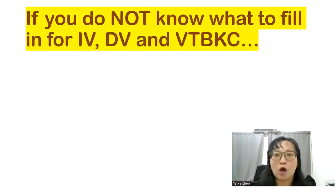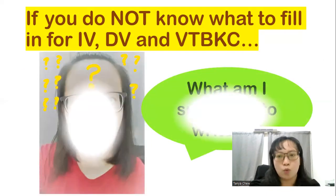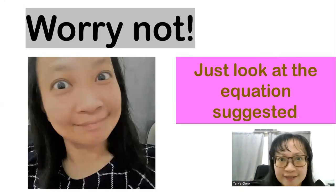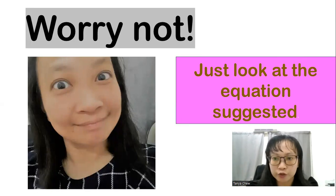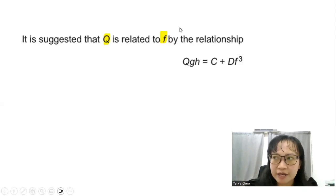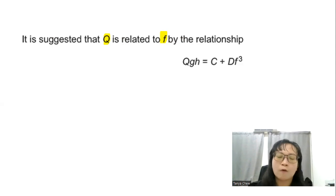So if you do not know what to fill in for independent variable, the dependent variable and the variables to be kept constant, don't worry. Sometimes you don't know which is my independent variable, which is my dependent variable and variables to be kept constant. So worry not. Just look at the equation suggested. It's very easy. They will always suggest an equation for you. So all you need to do, back to the equation. This is the equation that is suggested. So they suggested that Q is related to F. This is about Q and F, remember? So one will be your independent variable and the other one will be your dependent variable. So there is really no such fixed answer that maybe Q has to be independent variable and F has to be dependent variable or F has to be independent variable and Q has to be dependent variable. No such thing. No fixed answer for this. Everything, everybody will plan the experiment according to their way. So every experiment is different.